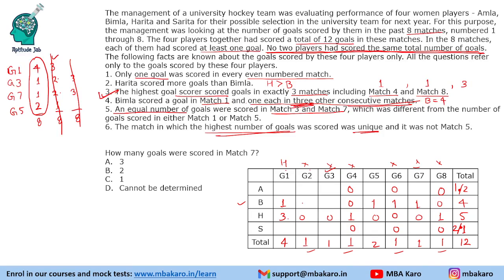Harita's goals are now fully determined. We have filled the goals for Bimla and Harita. For the remaining 2 players — Amla and Sarita — we know that 1 goal must be scored in games 2, 3 and 5 respectively. One of Amla or Sarita will score in 1 match and the other in 2 matches, but which player scores where cannot be determined.